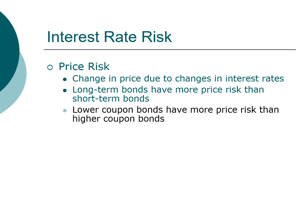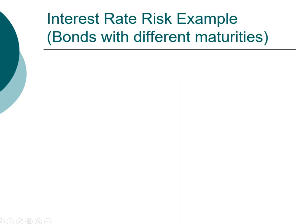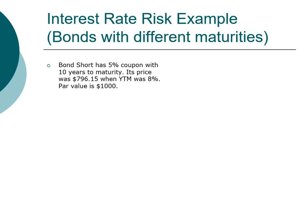We want to look at a couple of examples to demonstrate in numbers that bonds with longer maturity have greater price risk and that bonds with lower coupon also have greater price risk. In this example, we're going to look at two bonds with different maturities. The first bond is a short-term bond: 5% coupon, 10 years to maturity, priced at $796 when the yield to maturity was 8%, and a face value of $1,000.